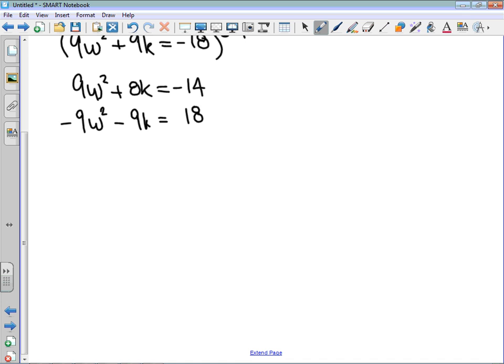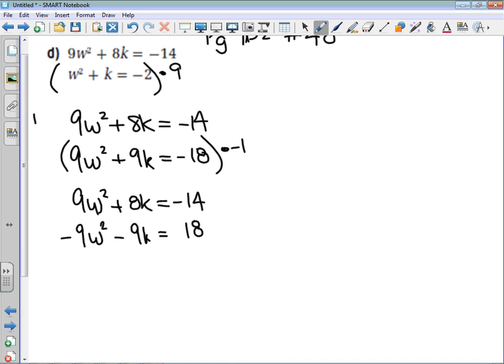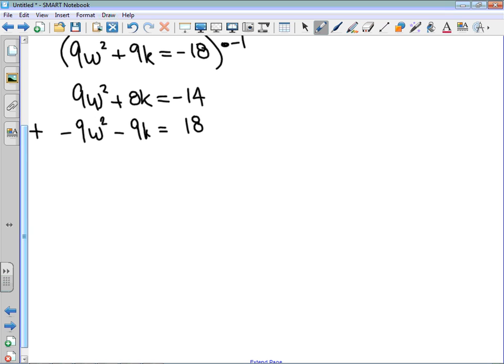And the reason why this is a little bit simpler is, what's 9w squared plus negative 9w squared? That's 0w squared. 8k plus negative 9k is negative 1k. And negative 14 plus 18 is positive 4. I wrote the 0w squared again. But as you work through these, you do not need to include that. So I have negative k is equal to 4. When I divide by negative 1, I get that k is equal to negative 4.